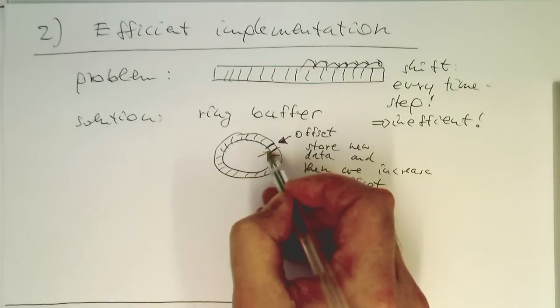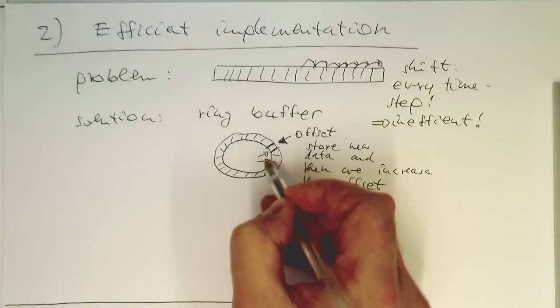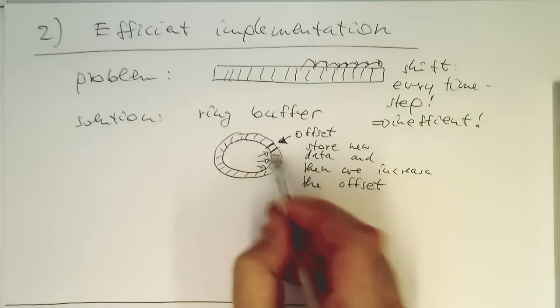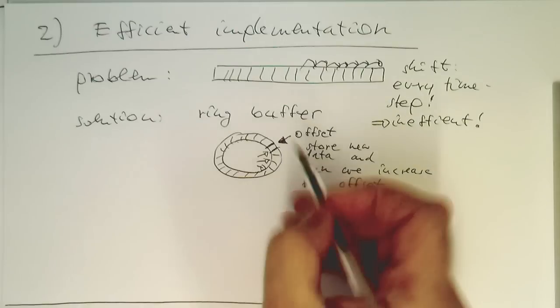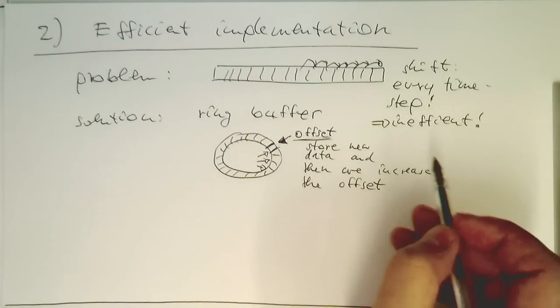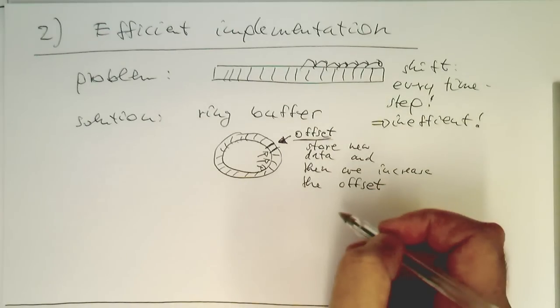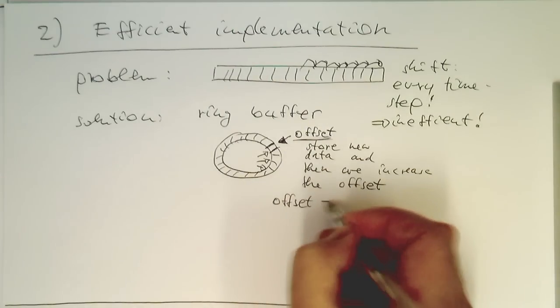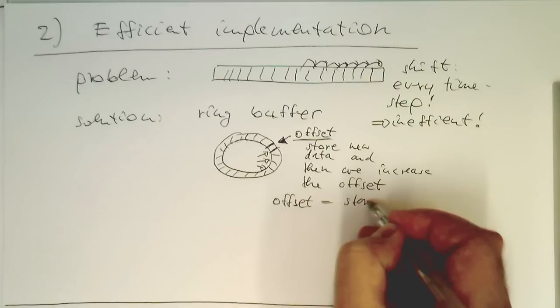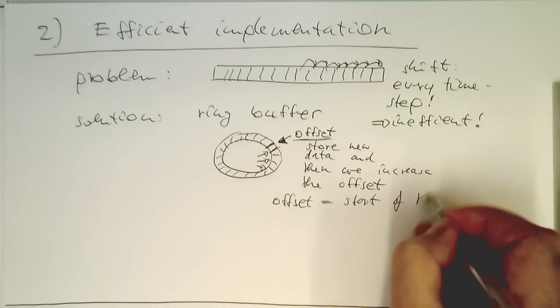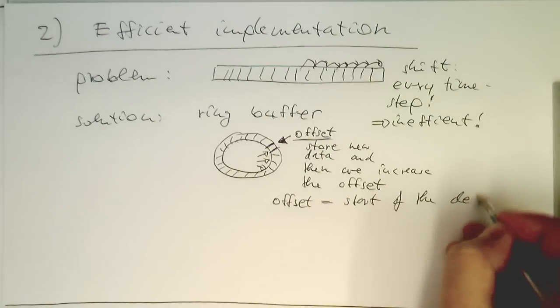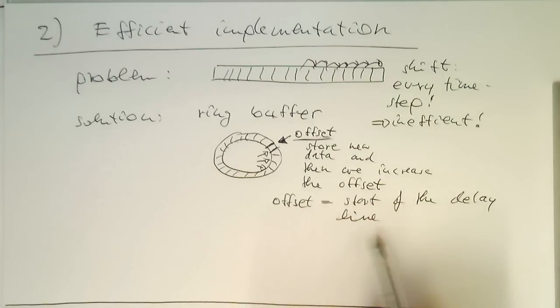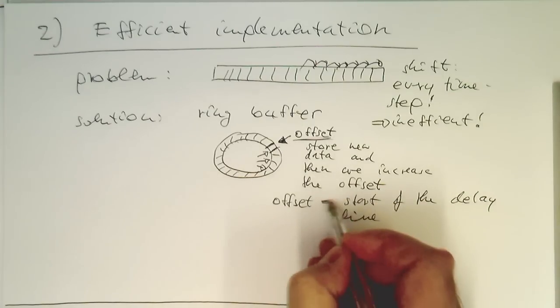So first it goes in here. Next time step, the new value goes in here. And so on and so on. So every time step, we are just storing the new value at another place. And we just define the offset here as the start of our delay line. So the offset is then the start of the delay line instead of shifting everything around.